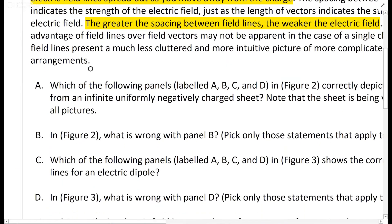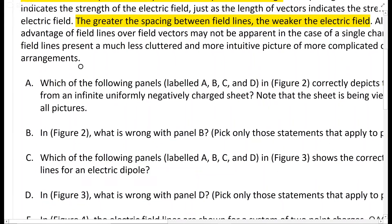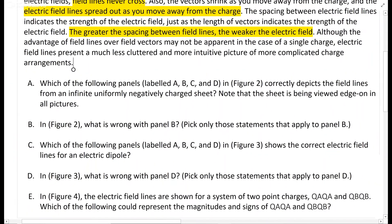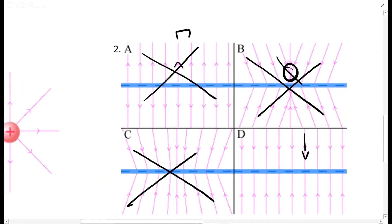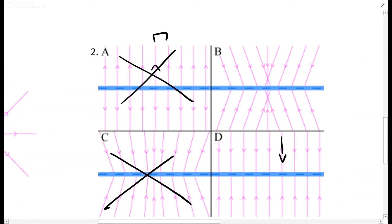Then for part B, we're asking what is wrong with panel B in figure 2, which we kind of went through. In panel B, once again, you have these crossings, and field lines never cross. And then also the field lines should be symmetric. These are at an angle, they're kind of funky. That's not right. So that's what's wrong with B.